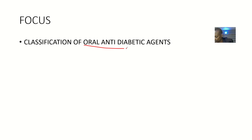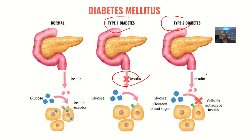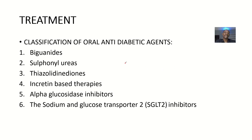So for the classification of oral antidiabetic agents or drugs: everybody knows what diabetes is. We have spoken about diabetes type 1 — there's no insulin production. For type 2, there's no response, there's resistance. So the classification of these oral antidiabetic agents includes biguanides.